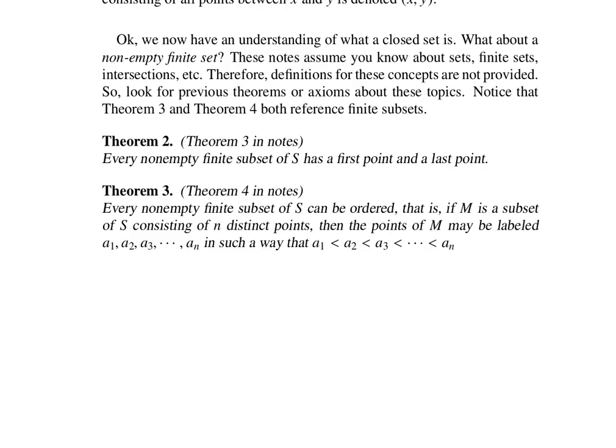Theorem 2 said that every non-empty finite subset of S has a first point and a last point. Theorem 4 in the notes said that every non-empty finite subset can be ordered. So you can label them a₁ to aₙ.